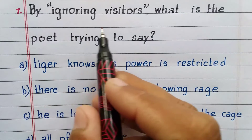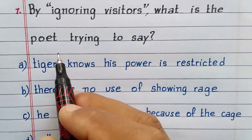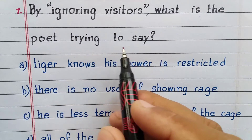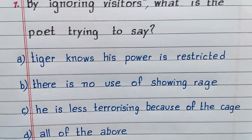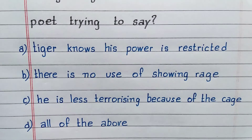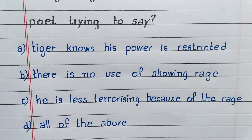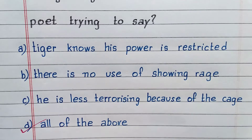By ignoring visitors, what is the poet trying to say? Option D. All of the above.